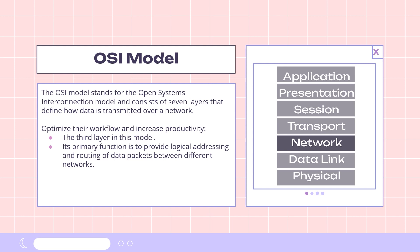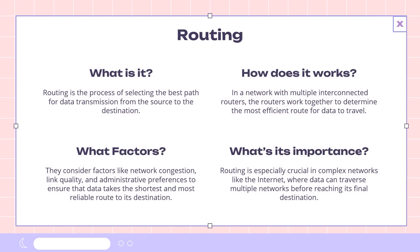Now that we understand the basics, let's talk about routing. Routing is the process of selecting the best path for data transmission, from the source to the destination. In a network with multiple interconnected routers, the routers work together to determine the most efficient route for data to travel. They consider factors like network congestion, link quality, and administrative preferences to ensure that data takes the shortest and most reliable route. Routing is especially crucial in complex networks like the Internet, where data can traverse multiple networks before reaching its final destination.